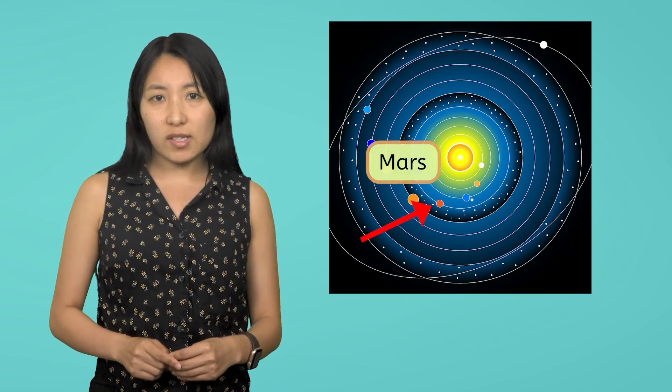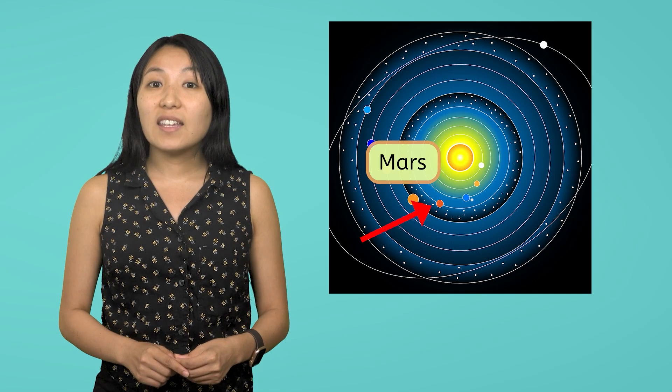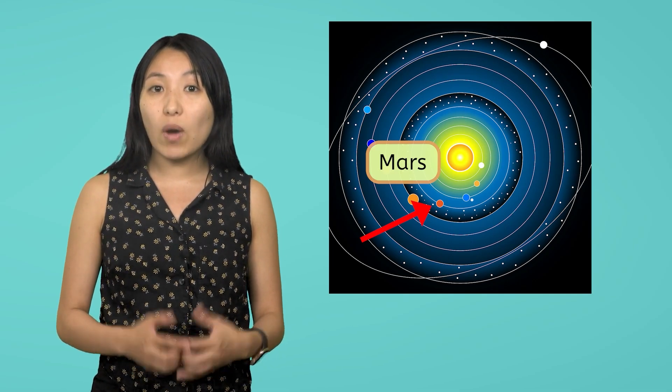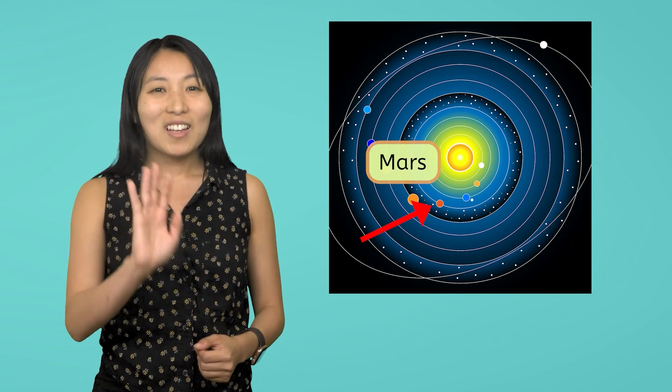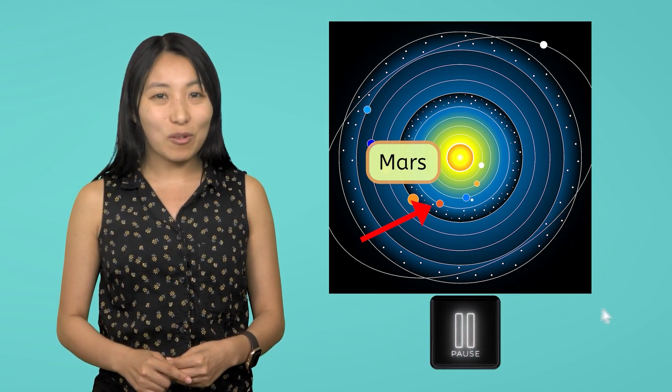Think back to our Mars situation, for example. How does a heliocentric model explain why Mars appears to change in size and brightness? Pause the video here and record your thinking in your guided notes.